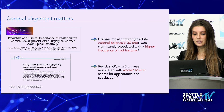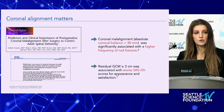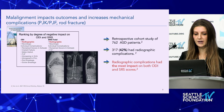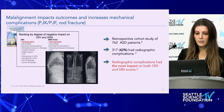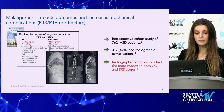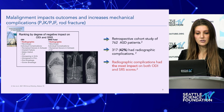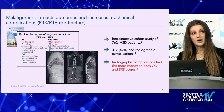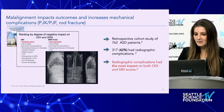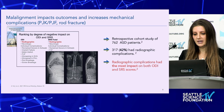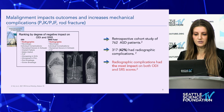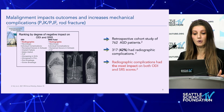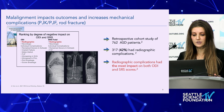Residual GCM greater than three centimeters was also associated with worse SRS-22 scores for appearance and satisfaction. Malalignment increases mechanical complications like PJK, PJF, and rod fracture — higher rates of proximate junctional pathology. Retrospective cohort studies of 762 patients showed that radiographic complications had the most impact on both ODI and SRS scores.